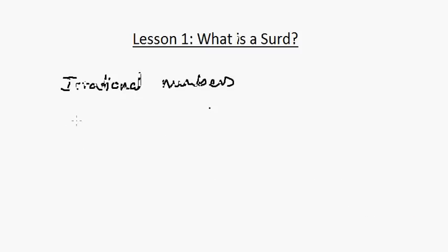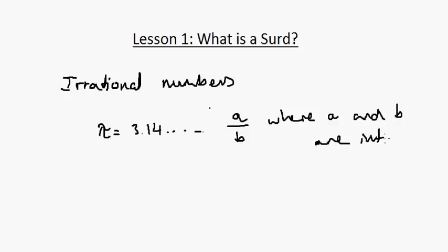If we give a few examples of what an irrational number is, a very common example is pi, which is 3.14 and so on. You cannot write this in the form a over b where a and b are integers, so pi therefore is irrational. And so now this is the way you come into surds.